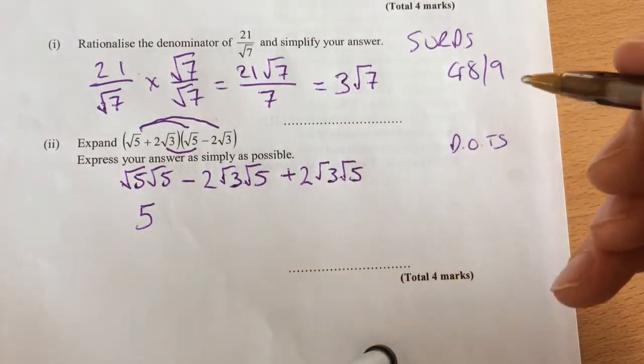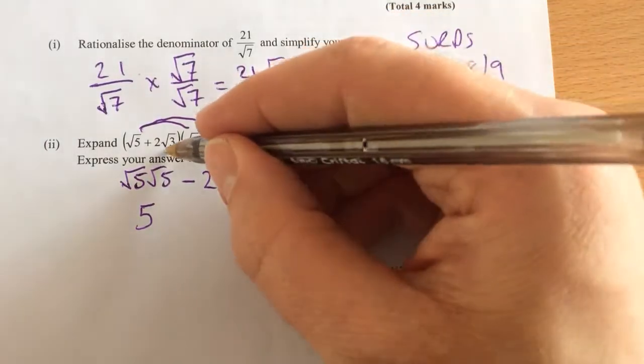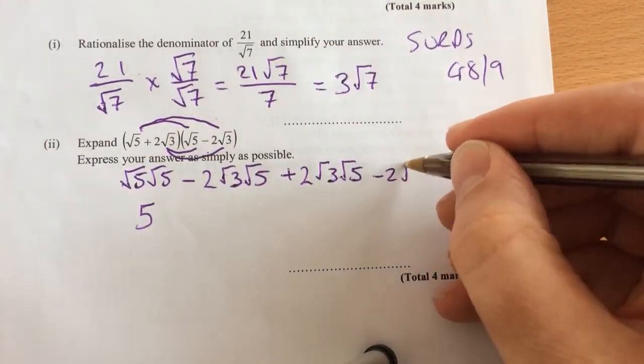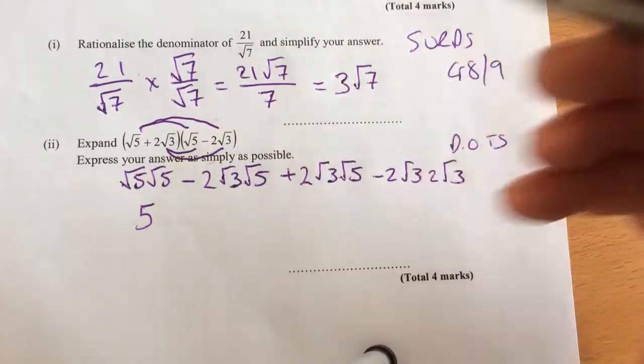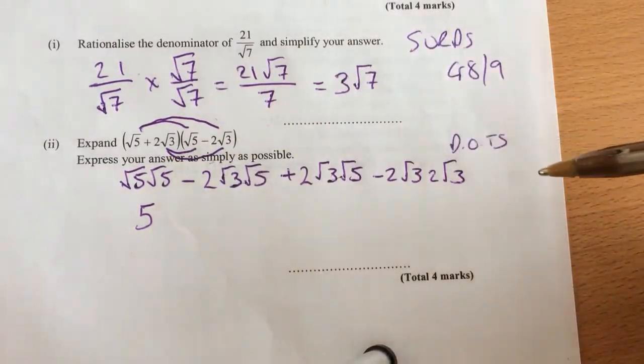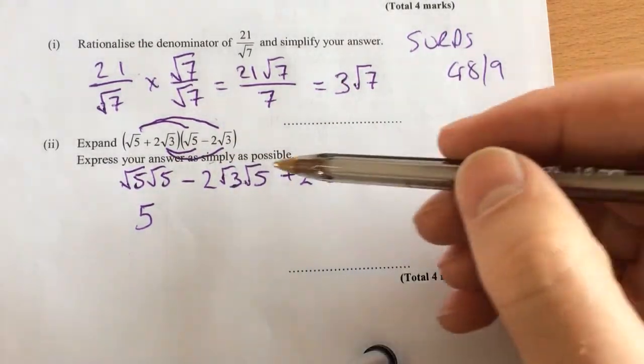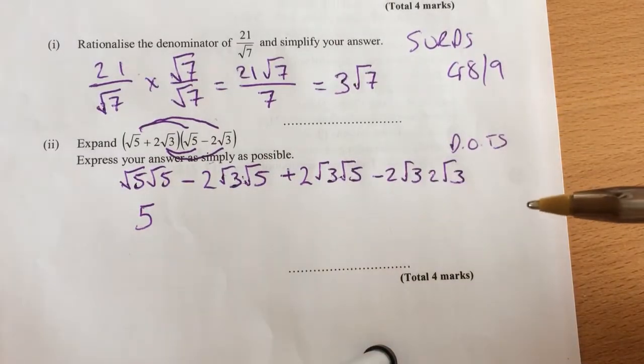Okay, and then times it by the minus 2 root 3 to get minus 2 root 3 times 2 root 3. Okay, so I'm timesing those last two terms. Again, when we're expanding, we always have four terms. Now, what's going to happen with these two terms here?